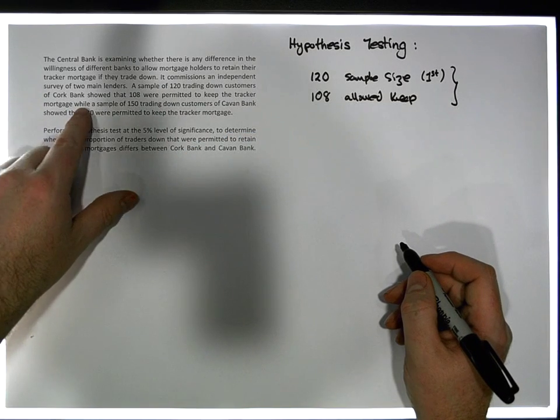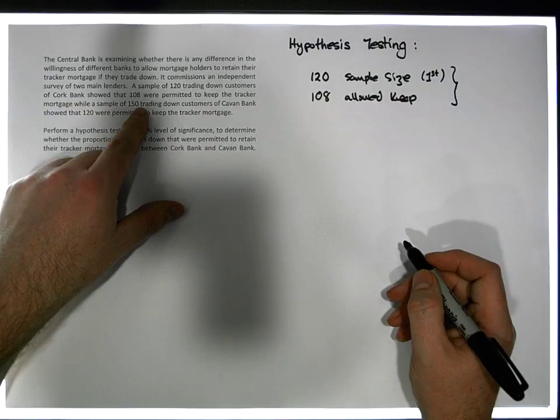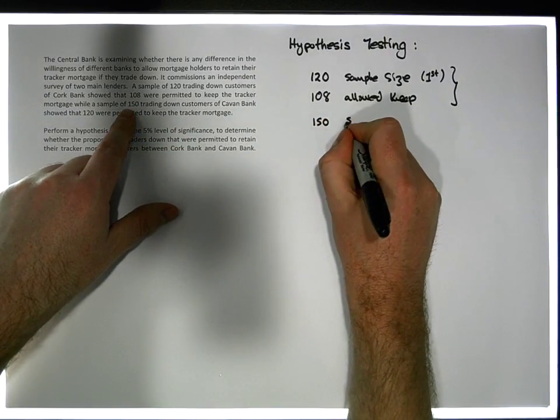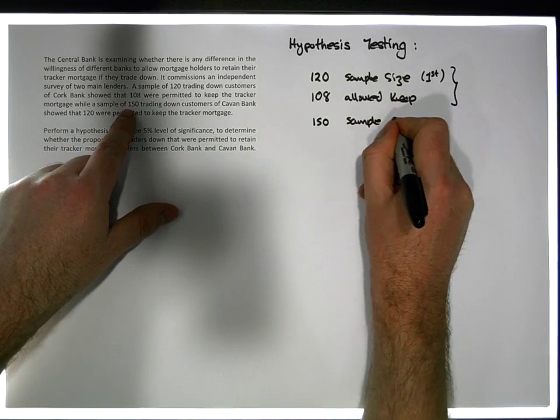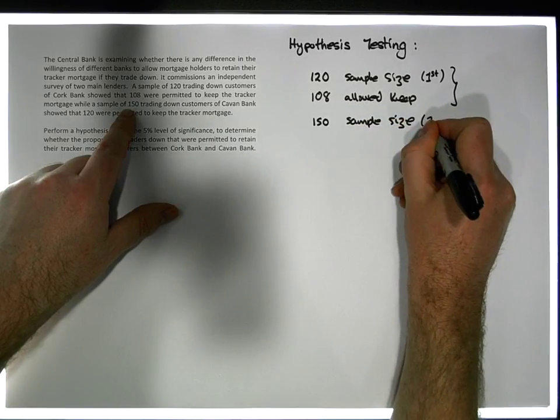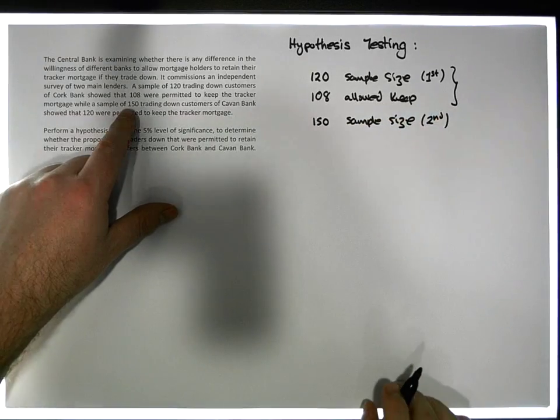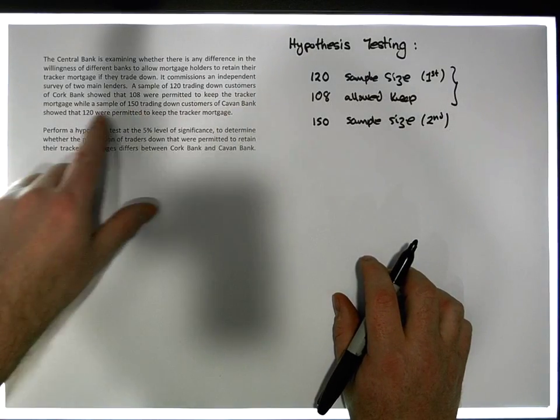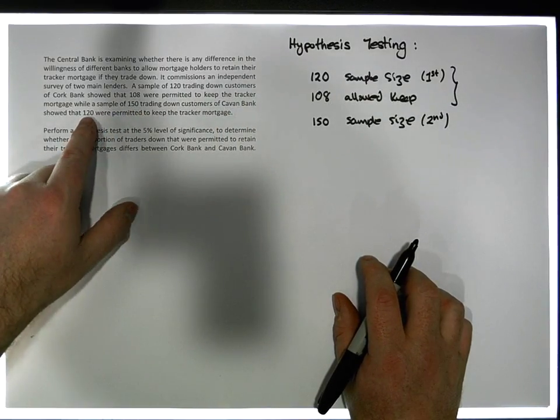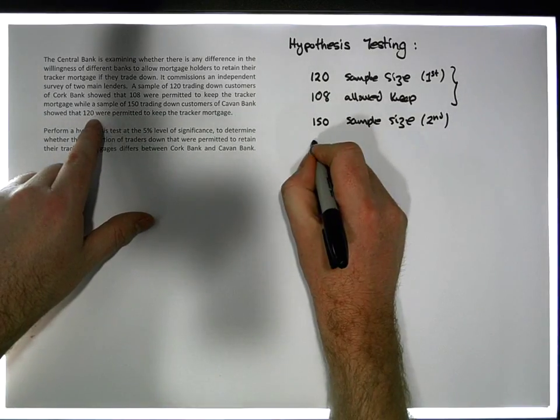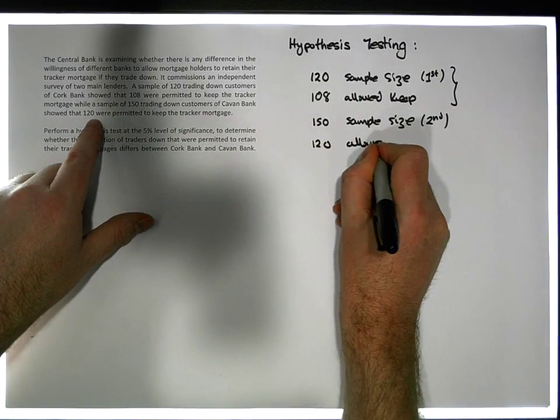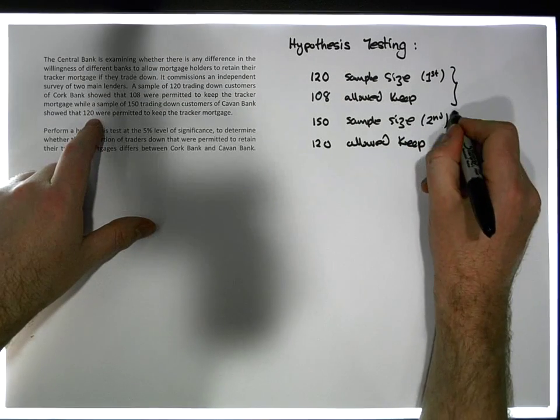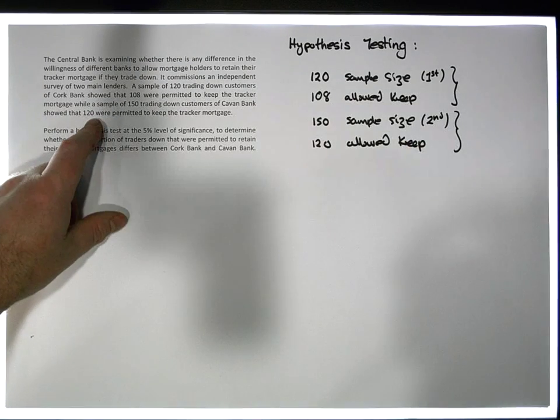Then we have another sample of 150 trading down customers of a Cavan bank. In this sample, there were 150 customers. This is another sample size, the second sample's information. Of them 150 customers in this Cavan bank, it showed that 120 of them were permitted to keep their tracker mortgage. This is my second sample information.